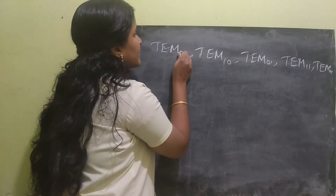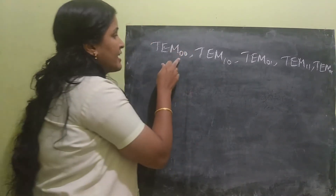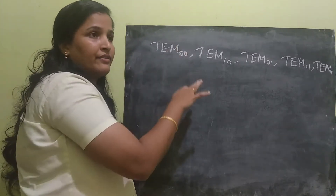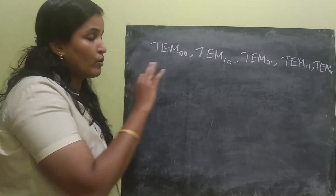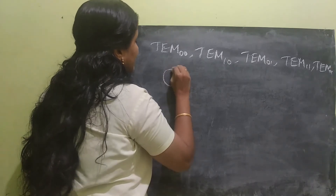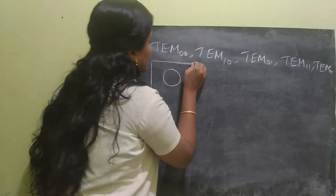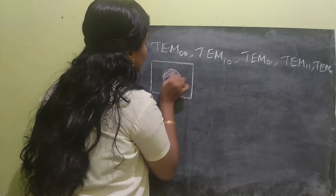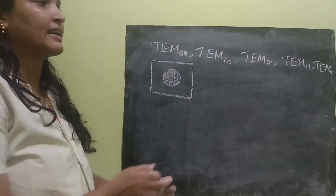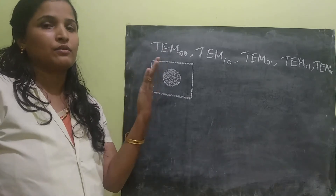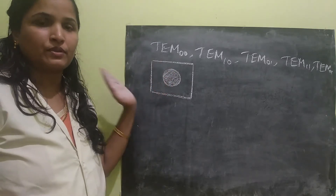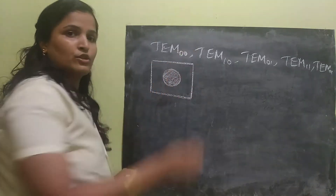First is TEM00. Here, if I scan in the horizontal direction or vertical direction, I won't be getting any cuts. So the beam will simply be a single spot. This is the frame, and this is the beam — the beam is traveling in this direction. I have cut the beam and studied the cross section of it. That is the TEM00 mode.